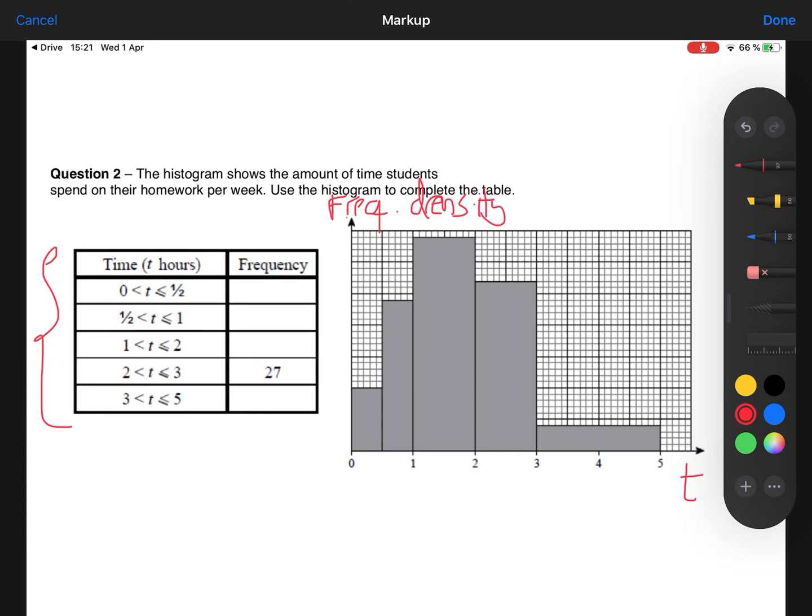I need to figure out what the scale of my histogram is. Is each tiny square 0.1 or is each tiny square 0.2 or is it something else? How am I going to figure out?